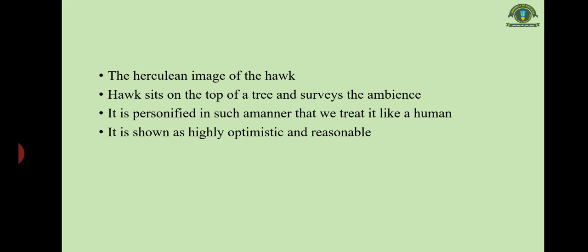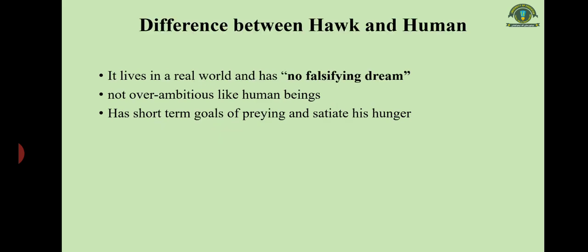The next poem is Hawk Roosting. Again we find the herculean image of the hawk, who sits on the top of a tree and surveys its surroundings. This bird has a legendary aura about it — herculean referring to Hercules, the Greek warrior known for his strength. The hawk is personified in such a manner that we treat it like a human. It is shown as a highly optimistic and reasonable creature — qualities particularly associated with humans. The poem belongs to his second phase.